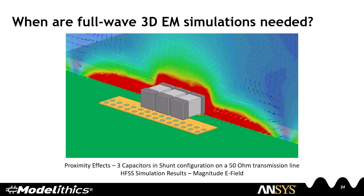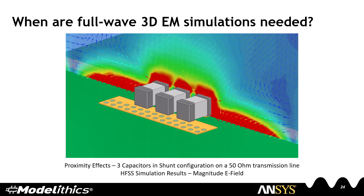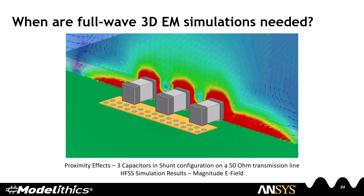So when are full wave 3D simulations needed? When components are placed in close proximity, coupling may occur. In this example, three capacitors are placed in shunt configuration on a 50 ohm transmission line. The distance between the capacitors is varied, and it can be seen that as the capacitors are moved further and further apart, the coupling between the components decreases.